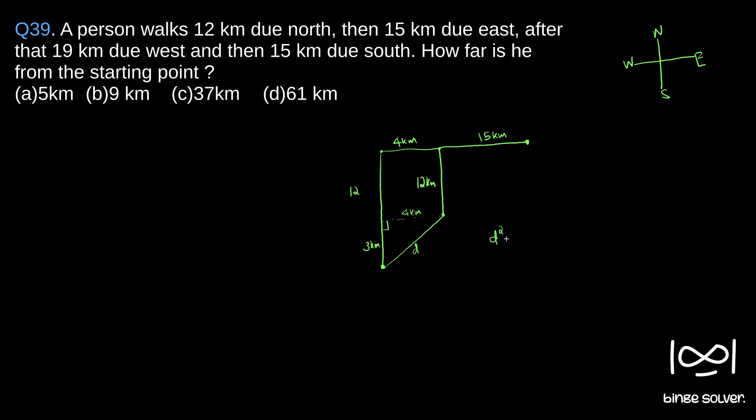Plus 3 square, or 16 plus 9, which is 25. So d square is 25, that implies d equal to 5.